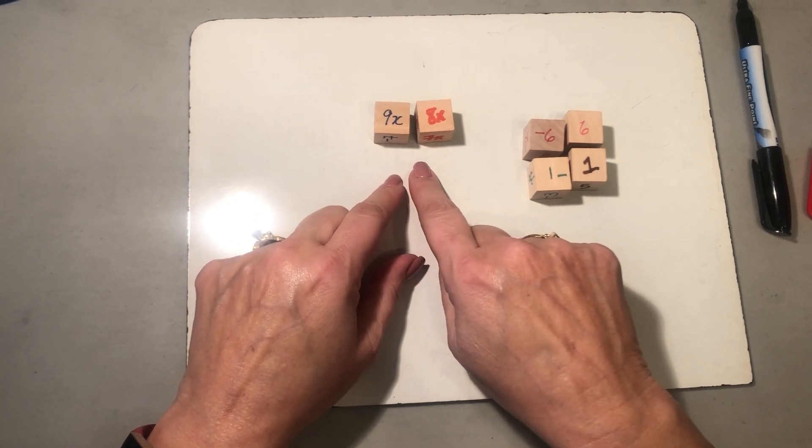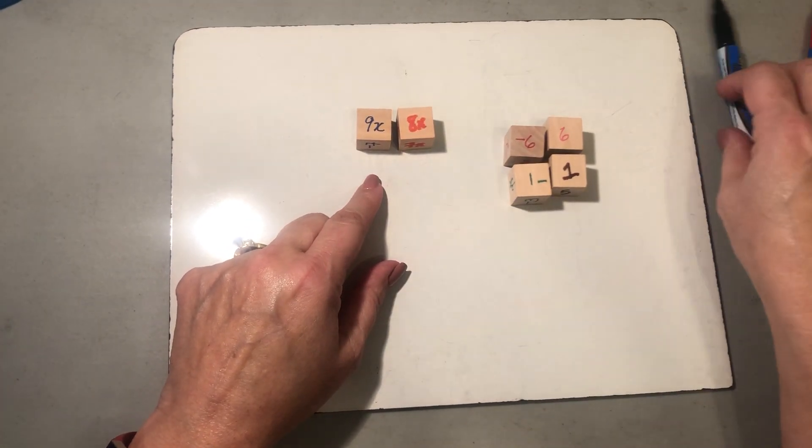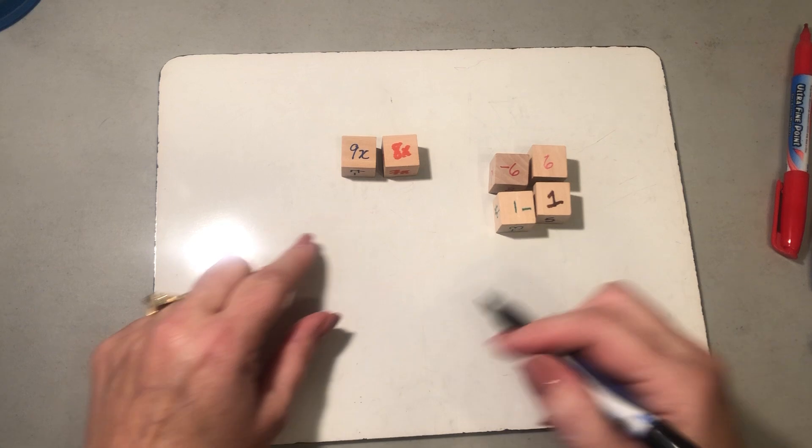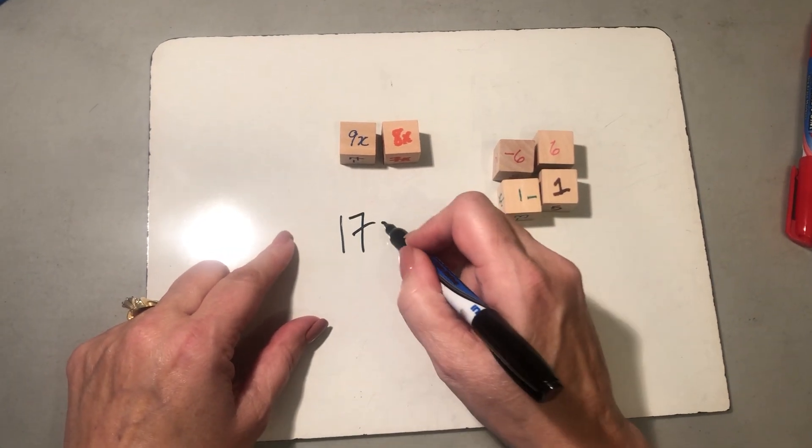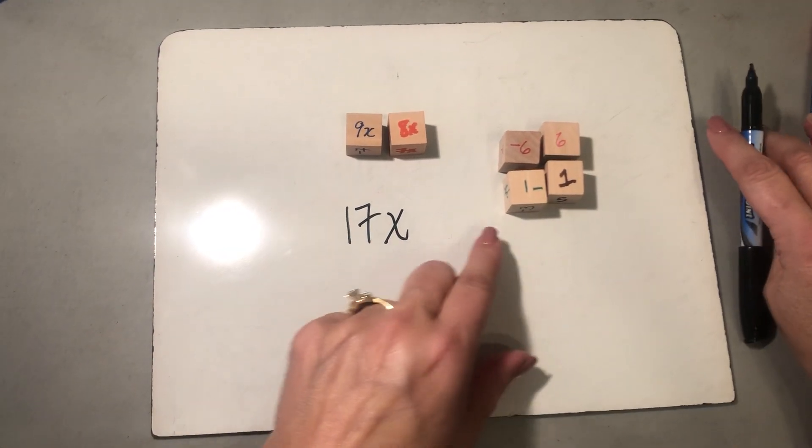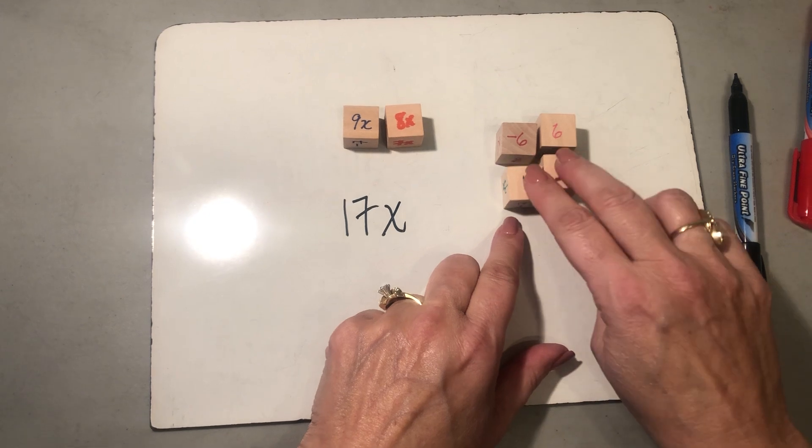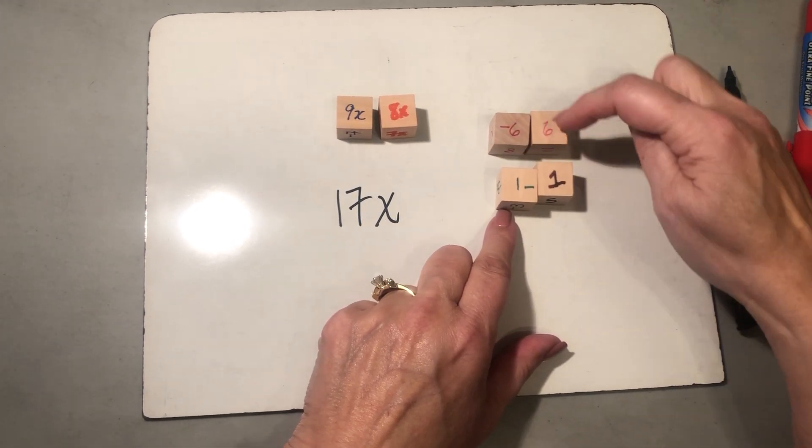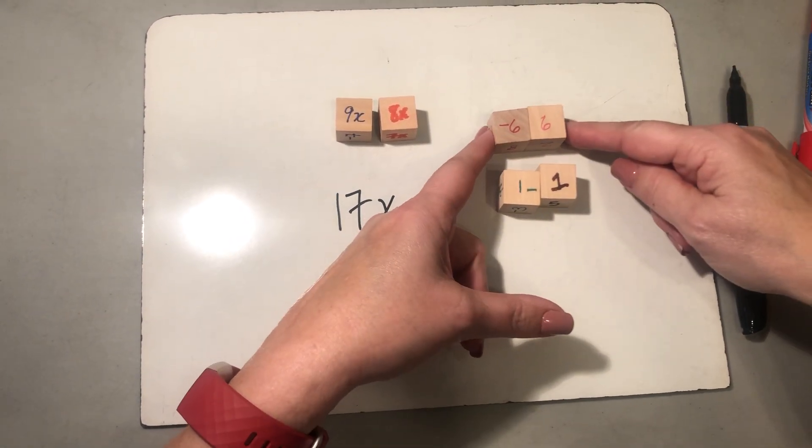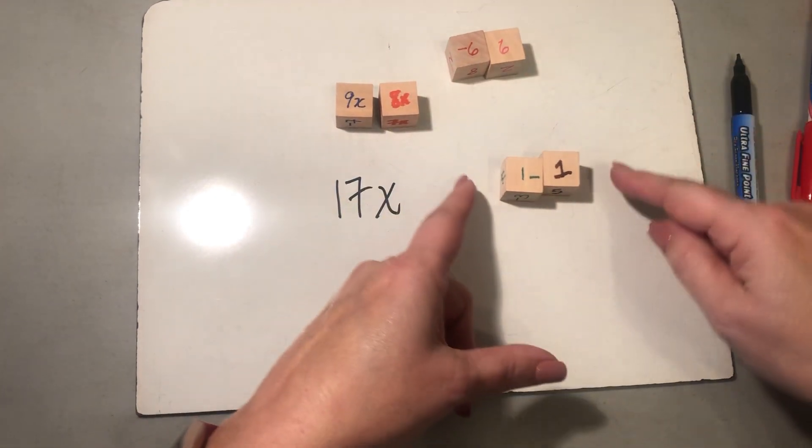So then what I want to do is look at the x's and say, well if I have 9x's and 8x's, I know that a positive 9 and a positive 8 give me 17x's. And then what I want to find out is what happens with the number cubes. What's interesting here we see that these are opposite and we know that makes a zero pair so we can set that off.